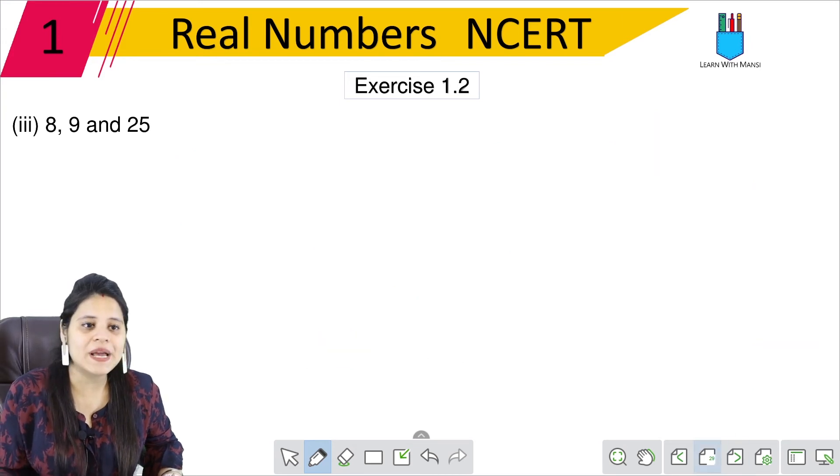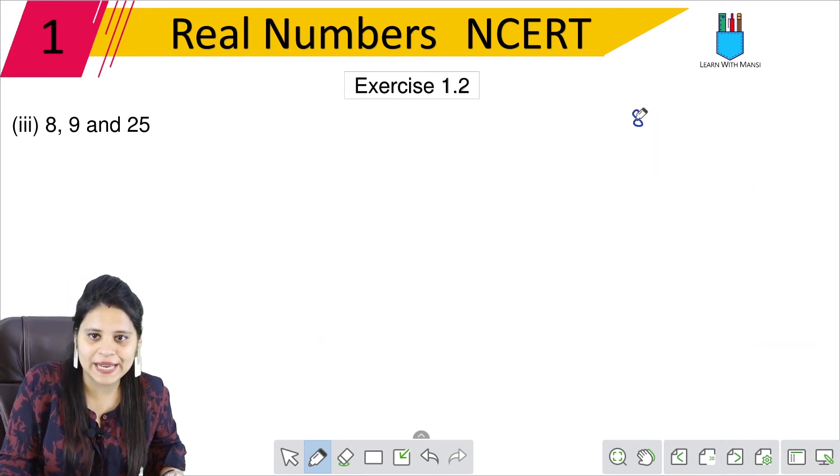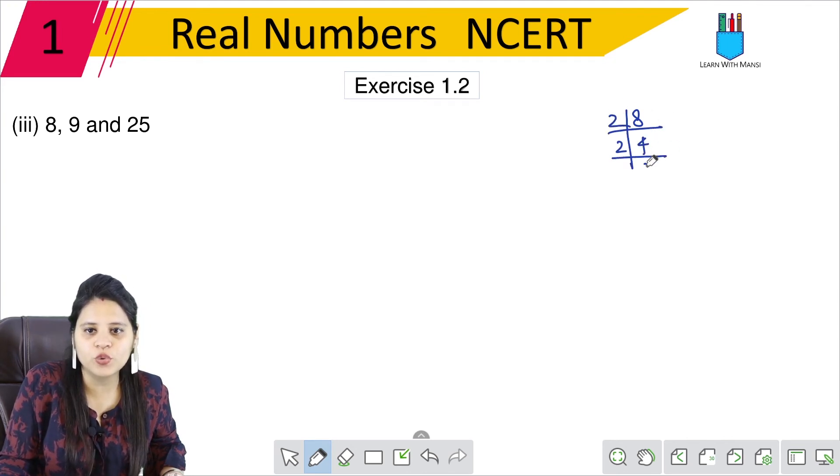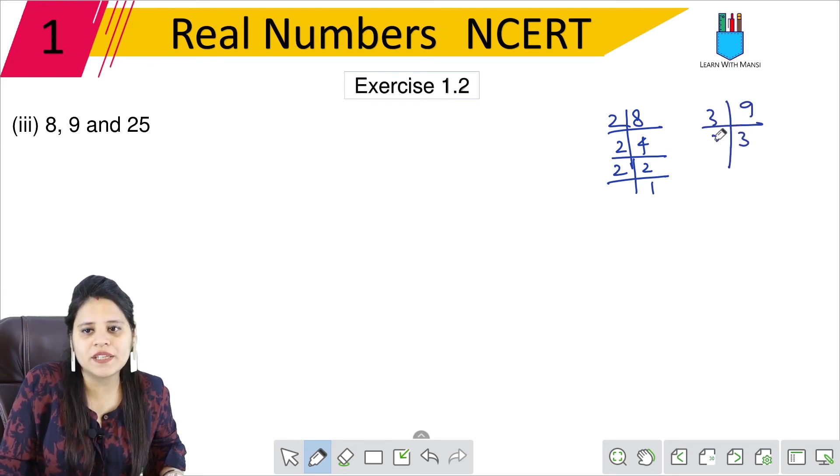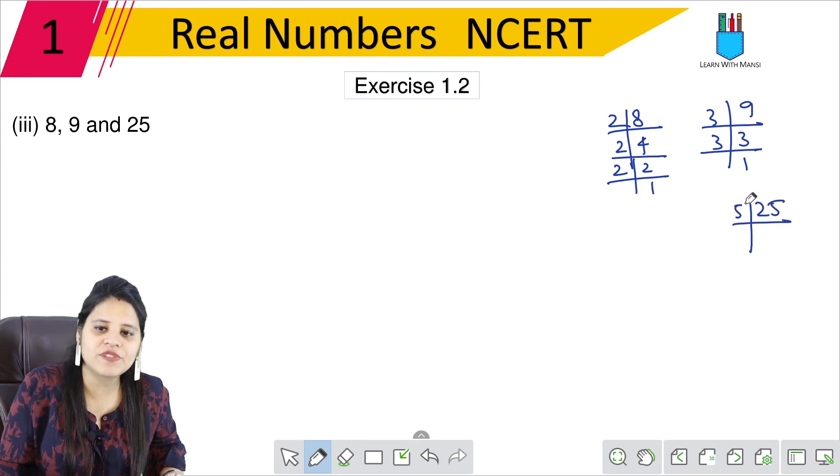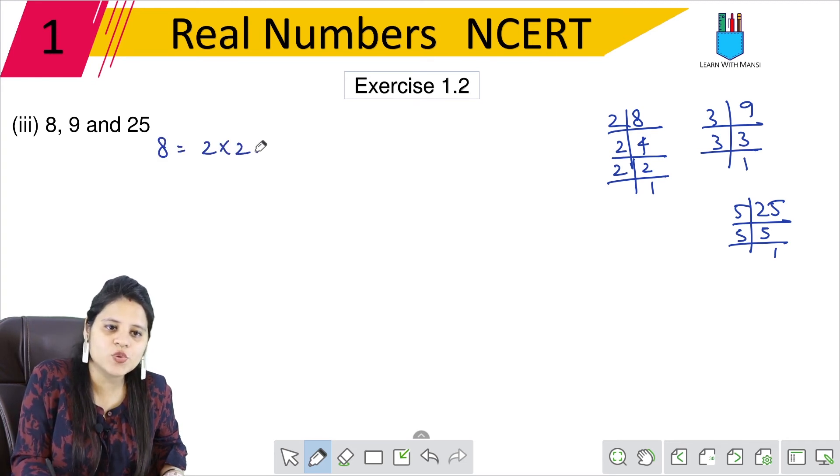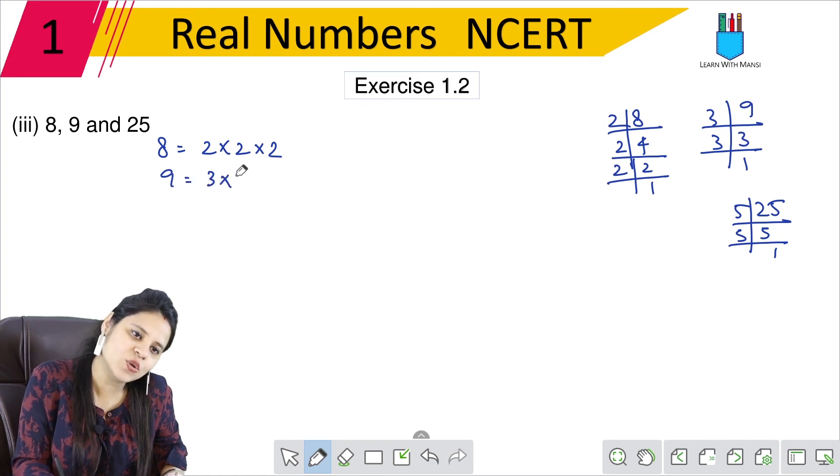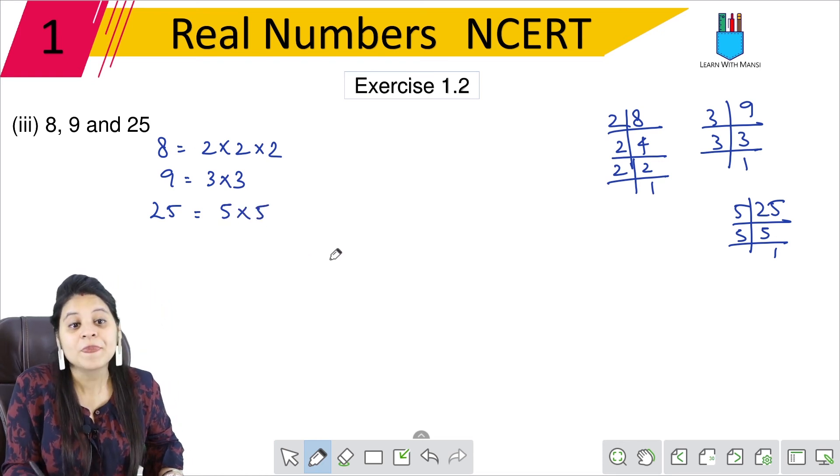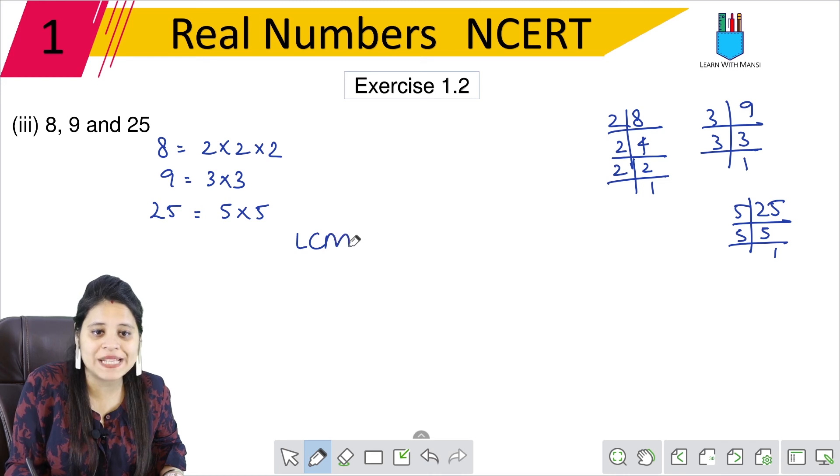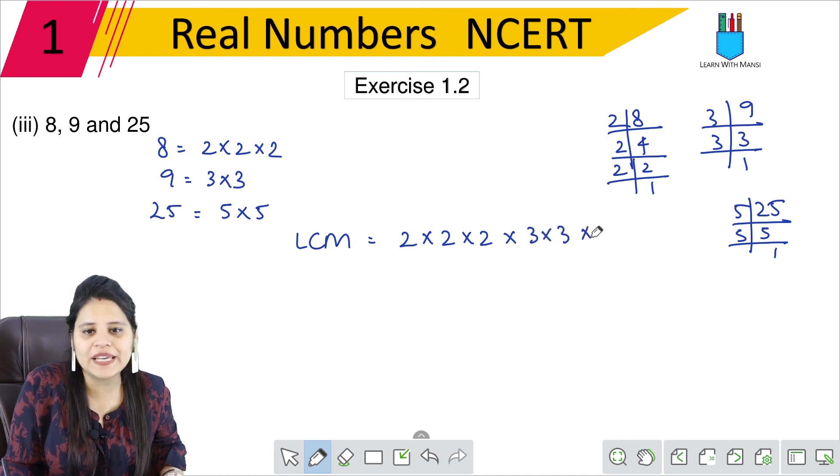Next third part is 8, 9 and 25. First we have 8. So this will be 2, 4, 2, 2, 2, 2 and 1. We will do 9: 3, 3, 3, 1. We will do 25: 5, 5, 1. So I can write: 8 is 2 × 2 × 2. 9 is 3 × 3, which is 3². Similarly, 25 is 5 × 5, which is 5². Now see, nothing is common. So when we find LCM, what will happen? 2 × 2 × 2 × 3 × 3 × 5 × 5. Basically, multiply all the numbers.